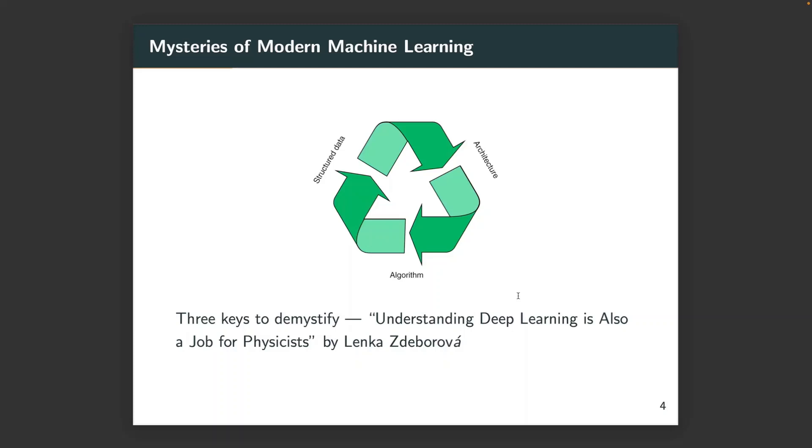A beautiful article by Belkin points out three keys to demystify the behavior of modern learning: structured data, algorithms, and architectures. Here, by algorithms it means some specific optimization algorithms such as stochastic gradient descent, and by architectures it means models such as neural networks.